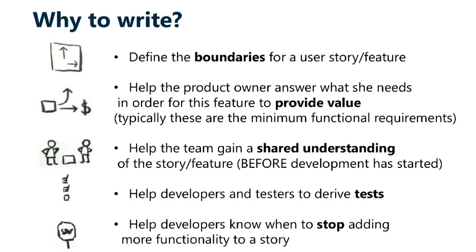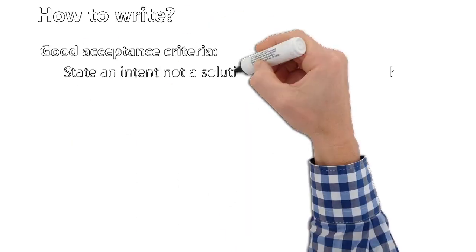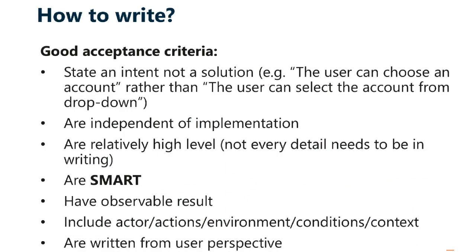How to write and why to write acceptance criteria? Why to write: first, define the boundaries of a user story or feature. Second, help the product owner answer what value he or she is providing. Third, help the team gain a shared understanding. Fourth, help developers and testers derive tests. Fifth, help developers know when to stop adding more functionality to a story. These five points — boundaries, providing value, shared understanding, tests, and when to stop — explain why you should have acceptance criteria defined.